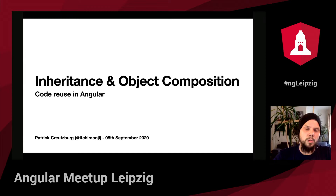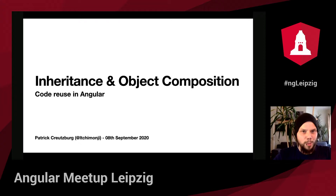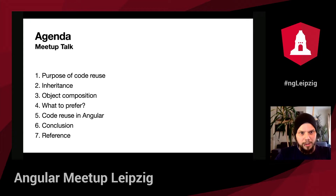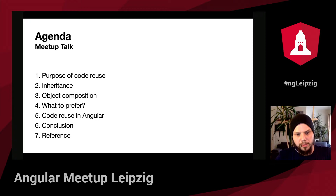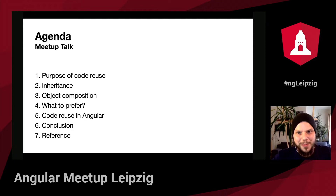As Robert said, I completed my education as a mathematical technical software developer, and I'm an employee at Energy to Market. Today we'll code a little bit sustainably. Here's a little agenda: we talk about the purpose of code reuse, then I explain inheritance and object composition, their relationship to code reuse, what to prefer, some nice examples in Angular, and a conclusion.